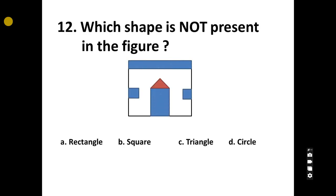12. Which shape is not present in the figure? A, square, C, triangle, D, circle. Correct answer is Option D, circle.